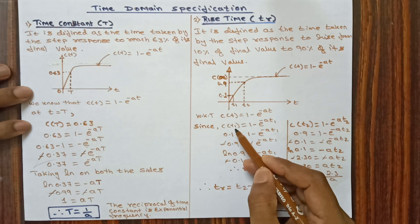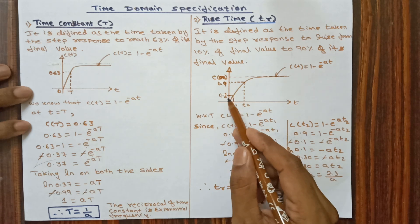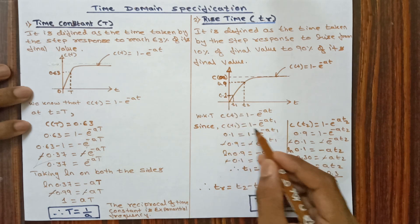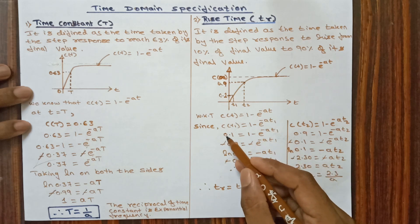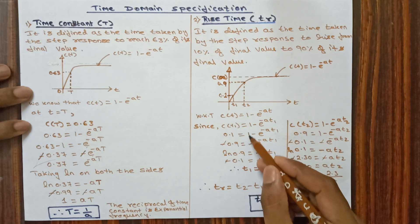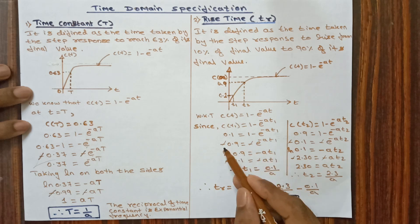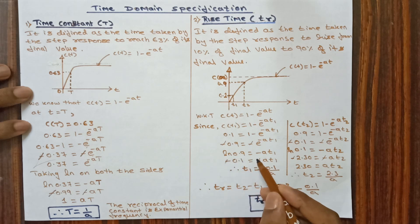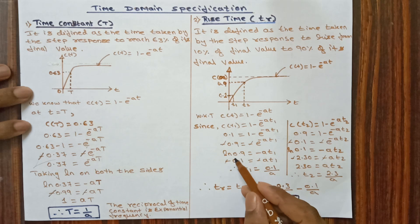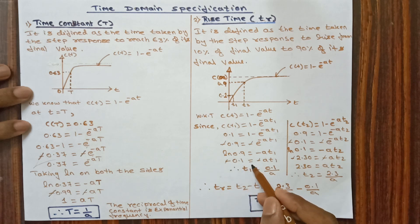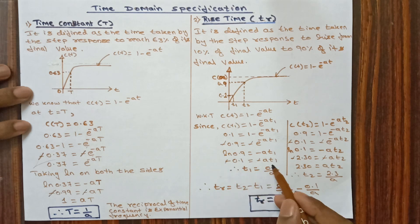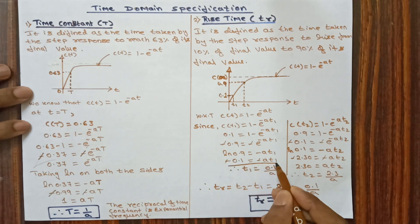For rise time at 10%, we consider t1. C(t1) equals 1 minus e power minus at1. Since C(t1) is 10%, that is 0.1 equals 1 minus e power minus at1. Rearranging: 0.1 minus 1 gives minus 0.9 equals minus e power minus at1. The negatives cancel. Applying log: log 0.9 equals minus at1. Log 0.9 is approximately minus 0.1, so minus 0.1 equals minus at1, and t1 equals 0.1 by a.